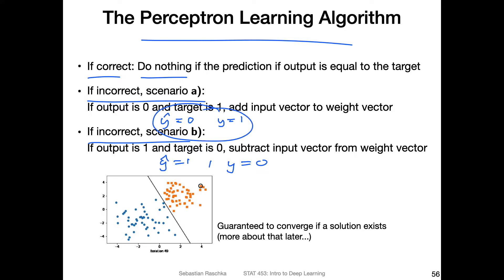How we update the decision boundary is by adding the input vector — the feature vector — to the weight vector. So why do we have to add the input vector to the weight vector? And why does it help at all? In this video I want to briefly go over the intuition behind it.